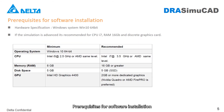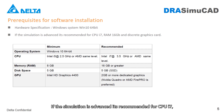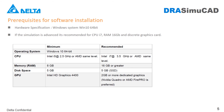Prerequisites for software installation — hardware specification: Windows System Win 10 64-bit. If the simulation is advanced, it is recommended to use a CPU i7, RAM 16GB, and a discrete graphics card.